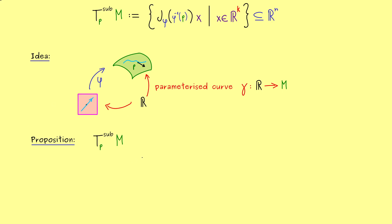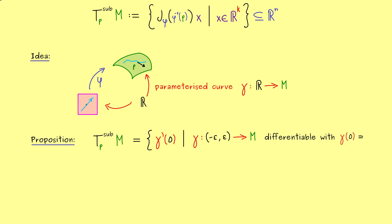We now get a very important proposition: the tangent space can be rewritten, and the only thing we need are the derivatives of parameterized curves. We can define the parameterization such that the point p on the manifold always corresponds to the parameter 0. The curve can be very small — from minus epsilon to plus epsilon — because we are only interested in the derivative at one point. This means we need a differentiable curve that hits the point p at parameter 0, so gamma of 0 equals p.